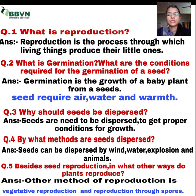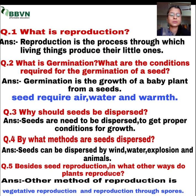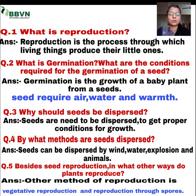Your next question is: why should seeds be dispersed? Jo seeds hoti hain, woh kyun dispersed hoti hain? Seeds need to be dispersed to get proper conditions for growth. Apni growth ke liye, proper condition ke liye seeds ka dispersal zaruri hota hai. Agar aap saari seeds ko paas paas laga denge, toh unki proper growth nahi ho payegi — unko woh proper conditions jo unko require hoti hain, woh proper tarike se nahi mil paati, kyunki saari seeds paas paas lagi hoti hain.